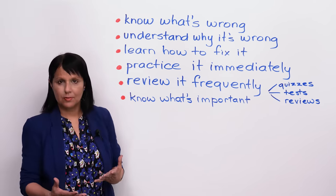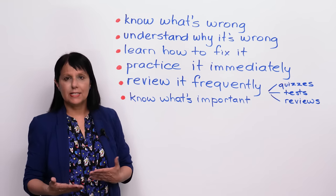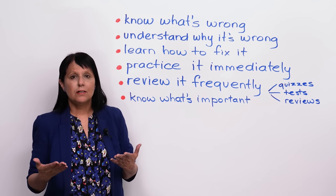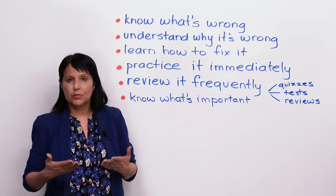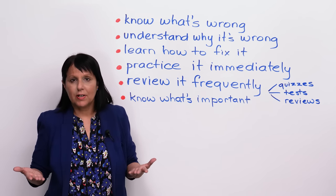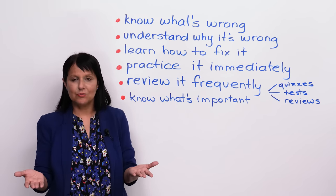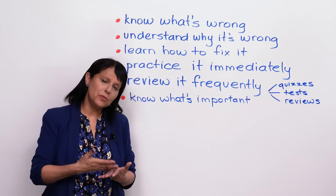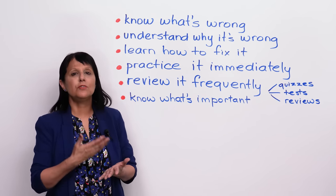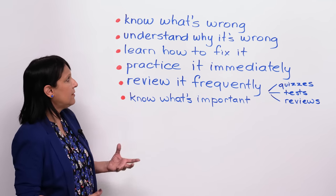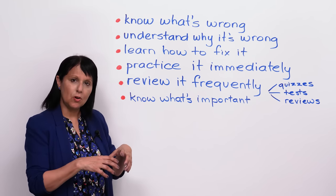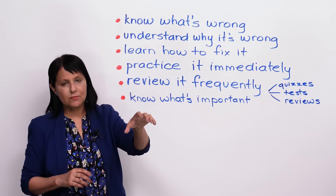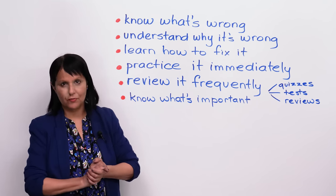First, you need to know what's wrong. When I get an essay or I get an email to correct, the problem is not that the person was trying to make mistakes — they're trying to do their best. That's what you do every time you write or every time you speak, but you didn't know that something was wrong. So, first you have to know what's wrong. Then, you have to understand why it's wrong. Why is it this word and not that word? Why is it this verb tense and not that verb tense?